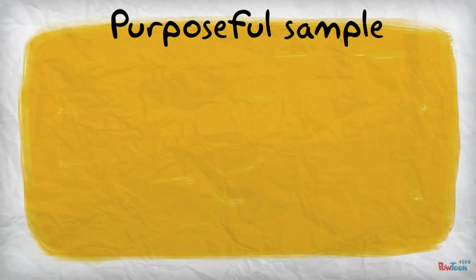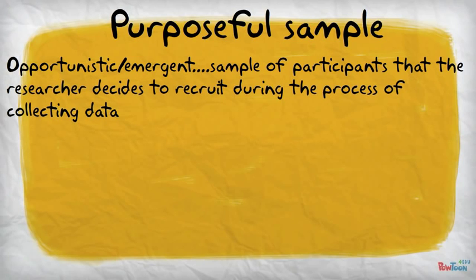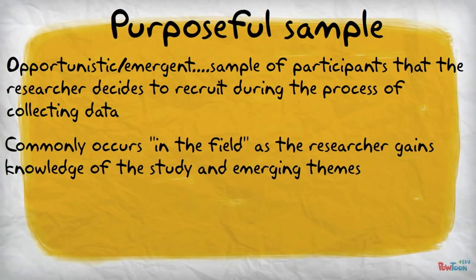An emergent sample, also known as an opportunistic sample, is a sample of different participants that the researcher decides to recruit during the process of collecting data. This is that emergent design discussed earlier in the course. This commonly occurs in the field as the researcher gains more knowledge about the study and its emerging themes, and decides to take advantage of opportunities that unfold during the study. For example, maybe some of the homeless people know people who were formerly homeless — that would be a great opportunity to take advantage of, recruiting that emerging group of formerly homeless participants.